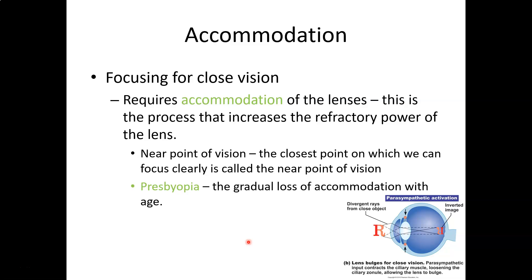Another downside of aging is that it becomes more difficult to change the shape of the lens. When you lose the ability to accommodate, you lose the ability to see things up close. That condition is called presbyopia, and most older people suffer from it. You may notice older people holding books or menus far from their face — that's presbyopia, and glasses can fix it.